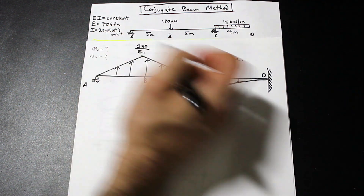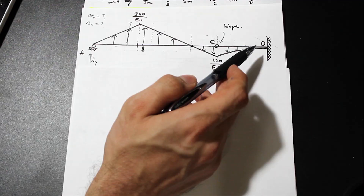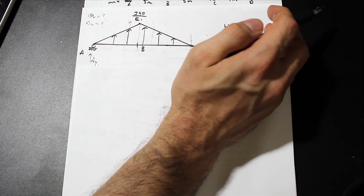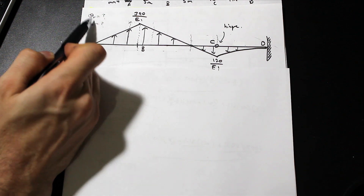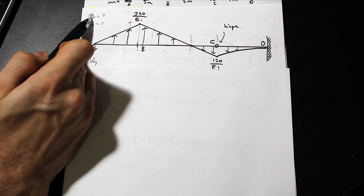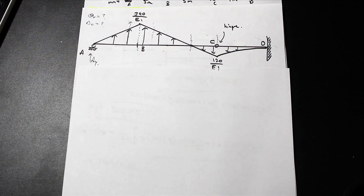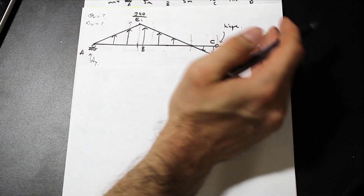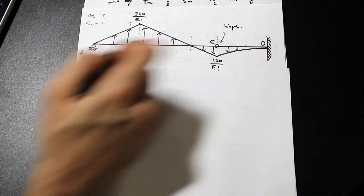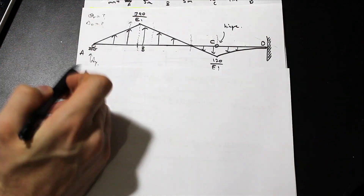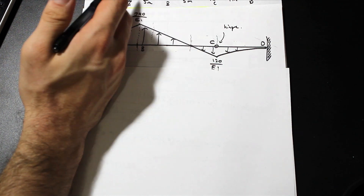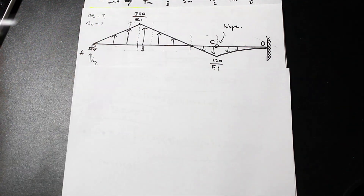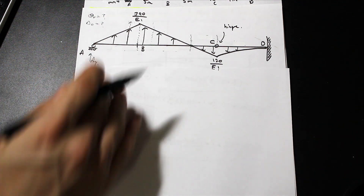Point D is over here. We need the shear at D — which equals the slope of the real beam — and the moment at D — which equals the deflection. To find the shear at D we need a reaction, and it looks like we need to find the reaction at A, since Ay is unknown.